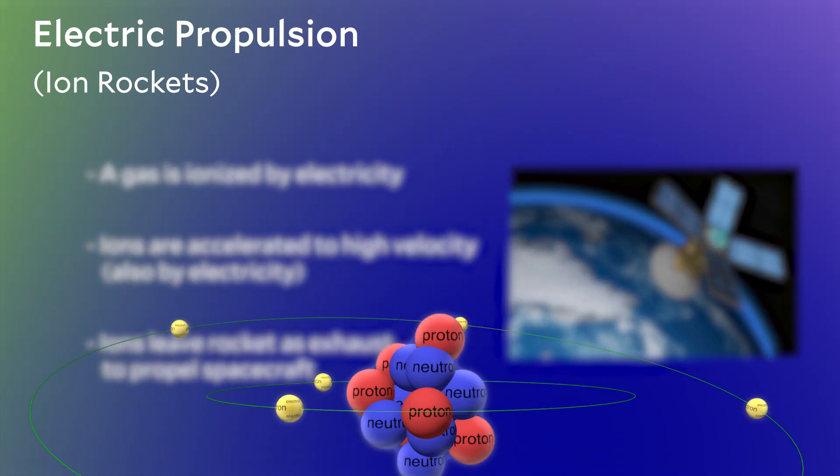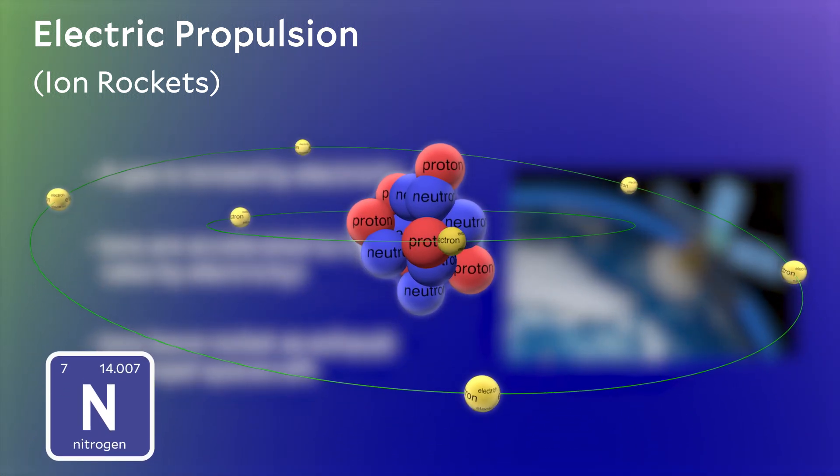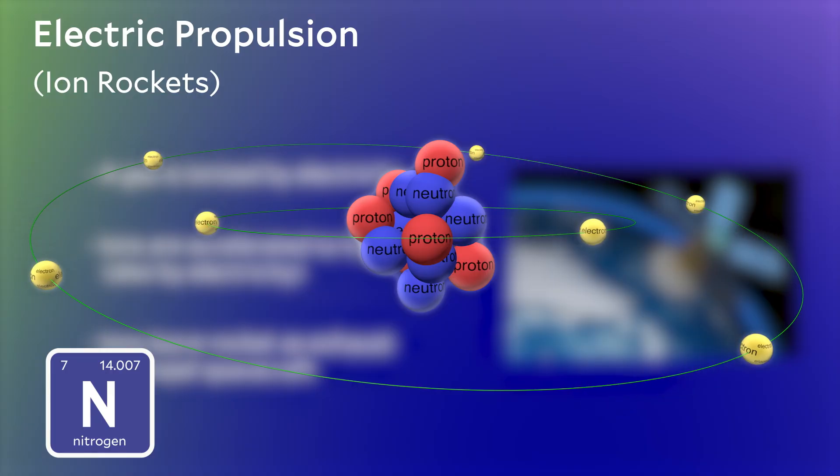So first you might ask, what's an ion? Okay, so let's say you have an atom, an atom of like oxygen or nitrogen. Atoms are a bunch of protons, neutrons, and electrons. Usually the electric charge of the protons and electrons cancel each other out and the atom is neutral.